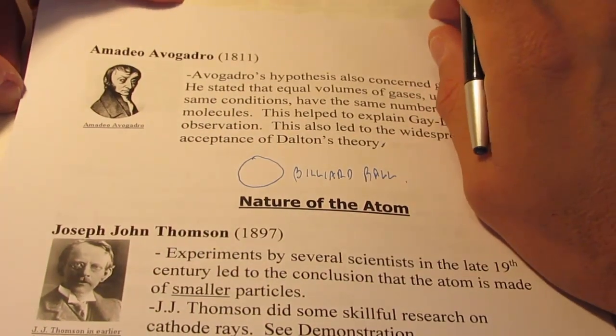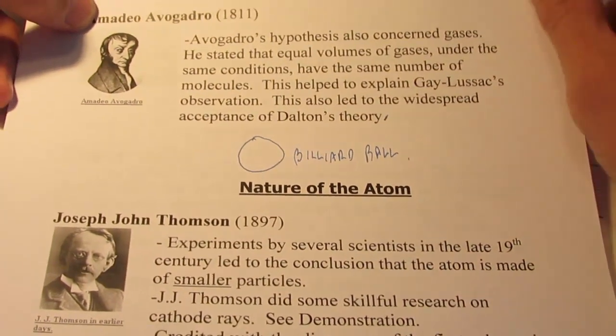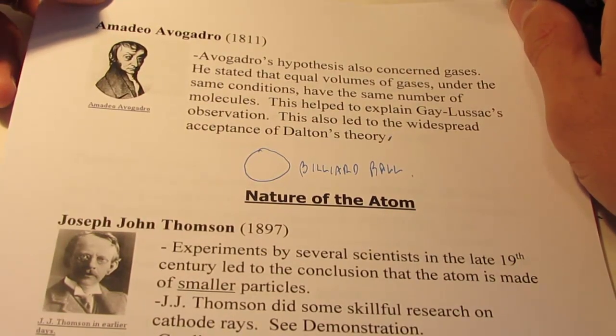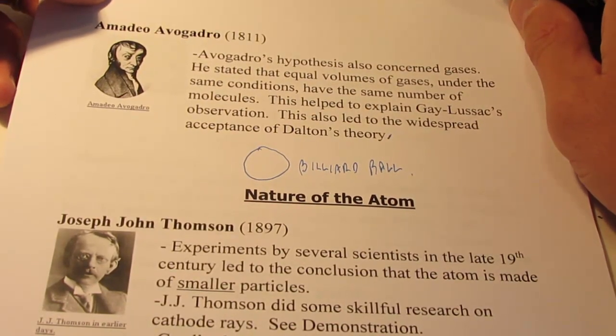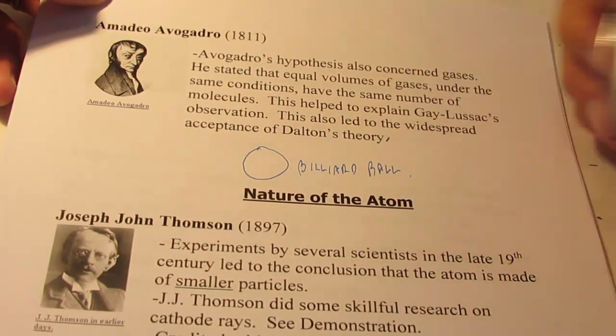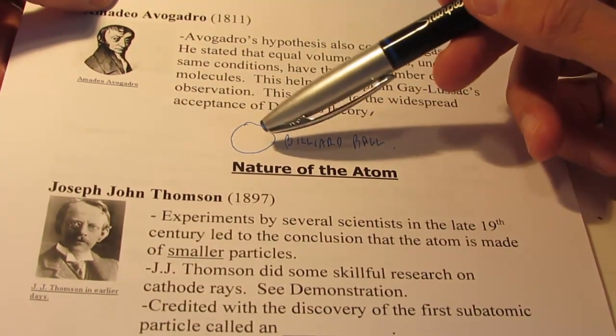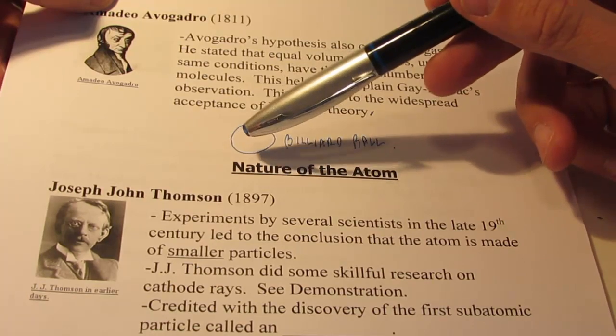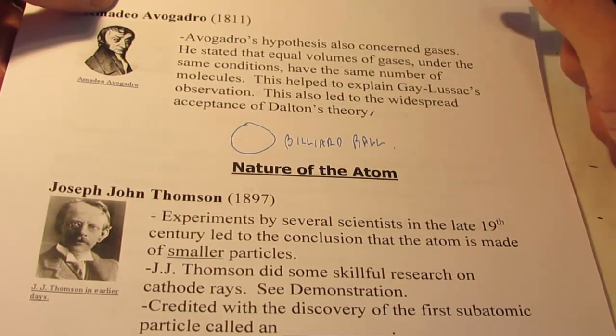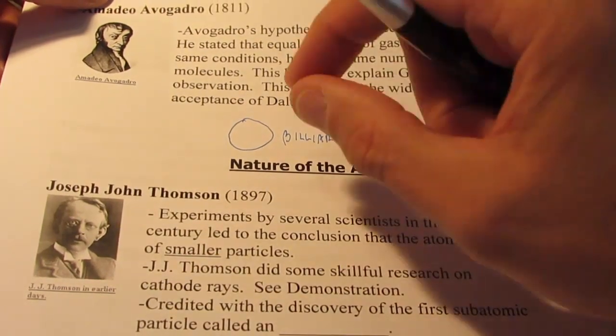Okay, we're back with part two of our atomic theory discussion. We had just finished talking about John Dalton and his atomic theory, his billiard ball model of the atom. He believed that once you got to the atom, you couldn't get to anything smaller and an atom was indivisible. We're about to debunk that just a little bit.